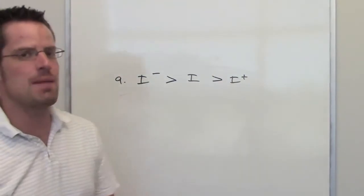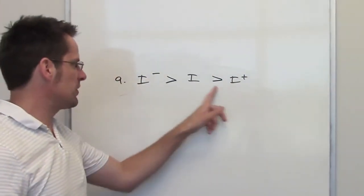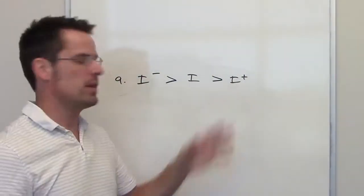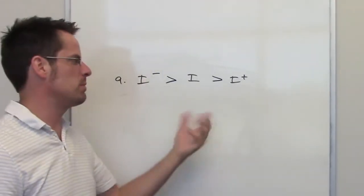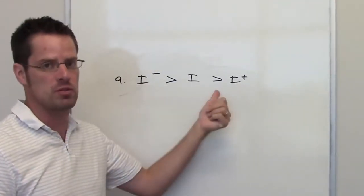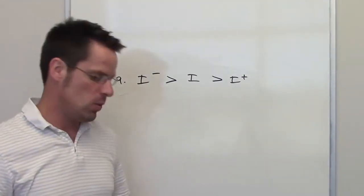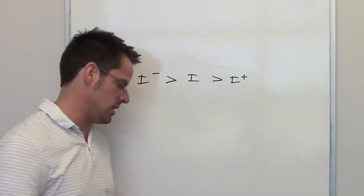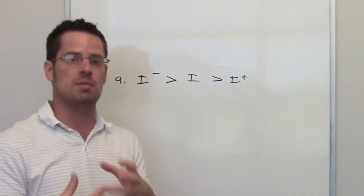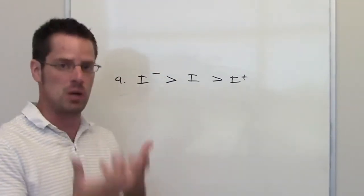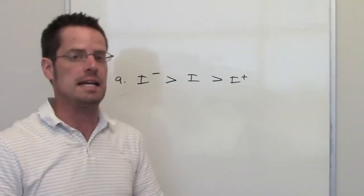When we're dealing with the same element, just different ions of that element, we can't talk about size being different by virtue of there being any more or fewer orbitals from one to the next. They'll have the exact same number of orbitals. We also can't talk about size changing because of different numbers of protons in the nuclei, because they'll have the same number of protons. They're all iodine.